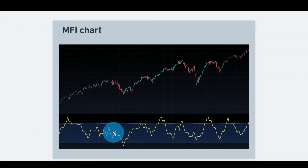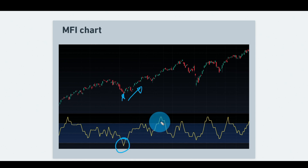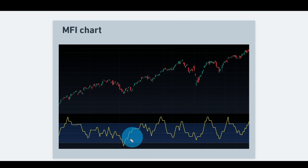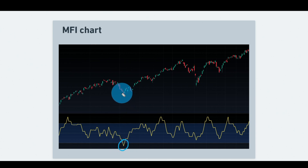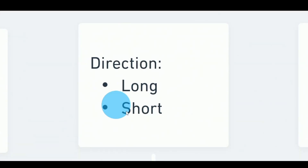Next we set the style: mirror version or breakout. In the mirror version, we wait for the indicator to enter the oversold zone and buy the market hoping it will go up; conversely, if it's in the overbought zone, we short the market hoping it will go down. In the breakout version, we wait for the indicator to enter the oversold zone and sell it, waiting for it to continue lower; and we wait for the overbought zone and buy, expecting further upside.